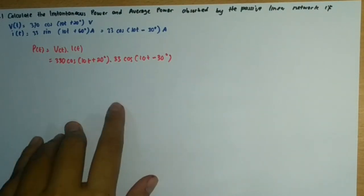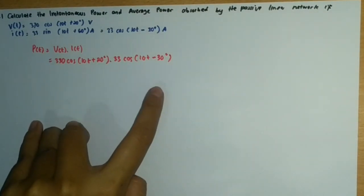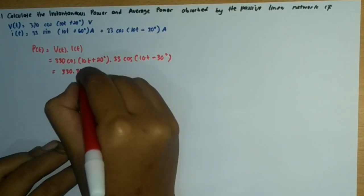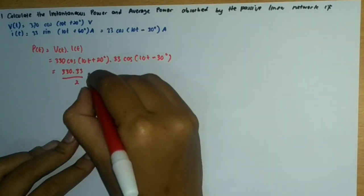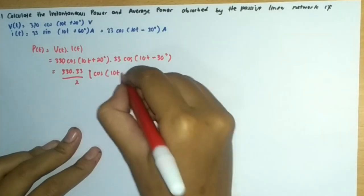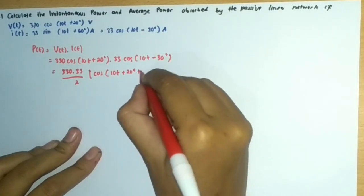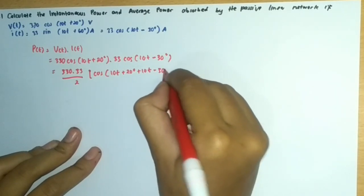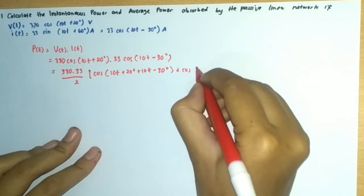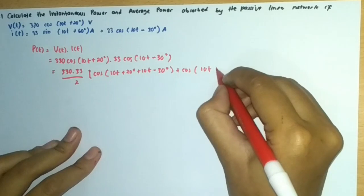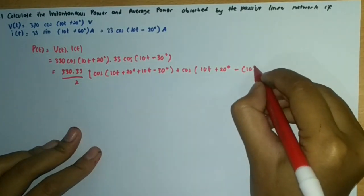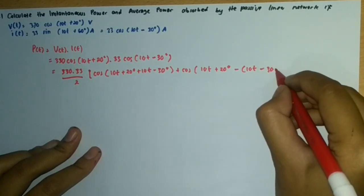After that, we use the trigonometric identity and we get this equation: cos(10t + 20°) times cos(10t - 30°) can be expanded using the product-to-sum formula.